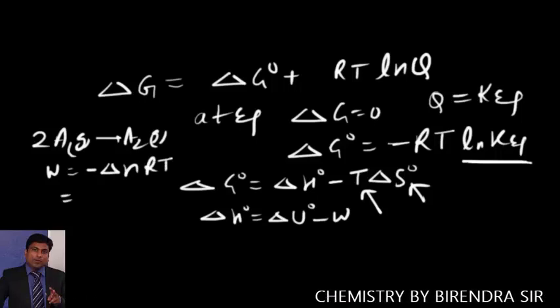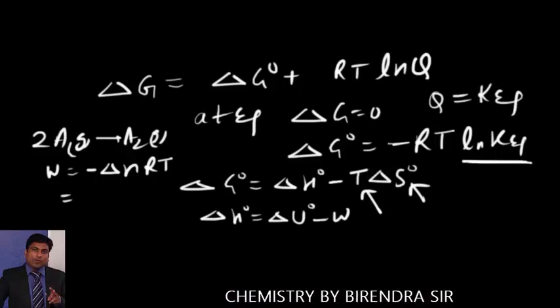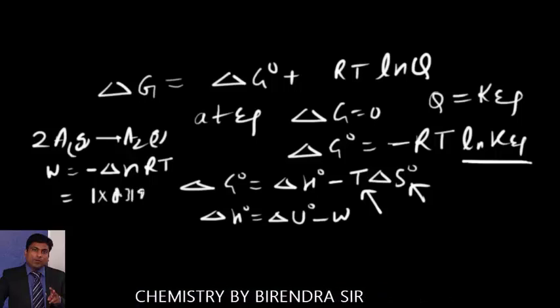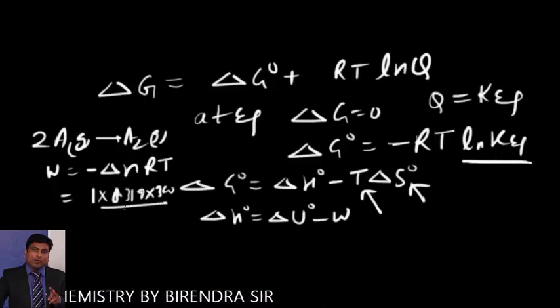Which is equal to, delta N is minus 1, so it becomes minus minus plus 1 into 8.314 into 300 Kelvin upon 1000. This will be in kilojoules.